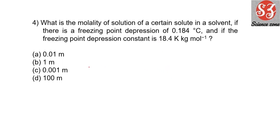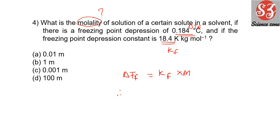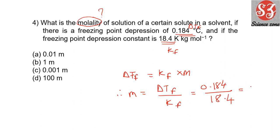Next: 'What is the molality of a solution of a certain solute in a solvent if there is a freezing point depression of this much?' You are given delta Tf and Kf, and molality is asked. The expression is: delta Tf = Kf × molality, therefore molality = delta Tf / Kf. Delta Tf is 0.184, divided by Kf which is 18.4. Both have the same digits, so they cancel, giving 0.01. The answer is option A: 0.01 molar.